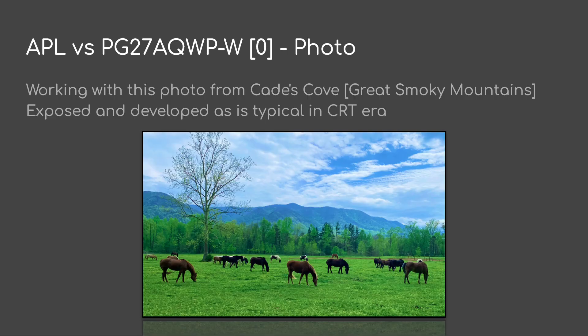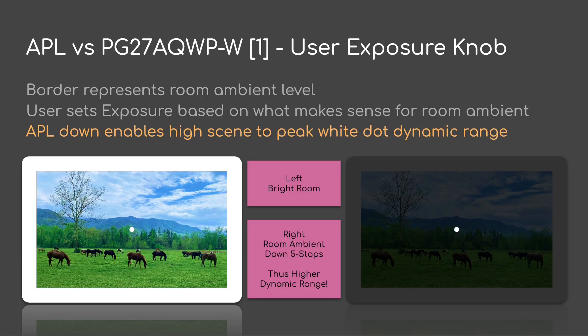Now we're going to be taking APL versus a modern W OLED. We'll be working with this photo from Cade's Cove in the Great Smoky Mountains. This was exposed and developed as typical in the CRT era — a relatively low contrast photo taken in the morning before the sun cuts in. The important thing here is that games should have a user exposure knob. The image has a border, and that border represents room ambient level.